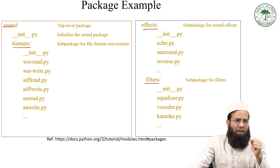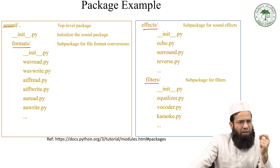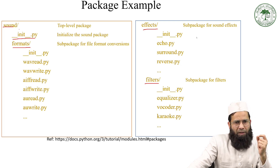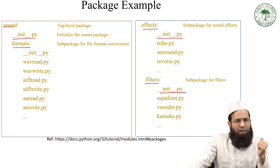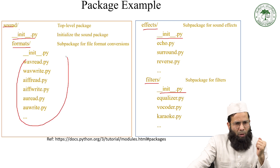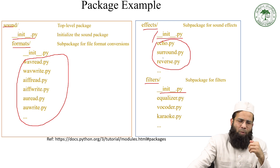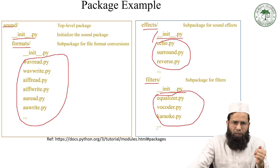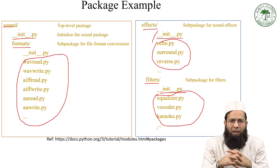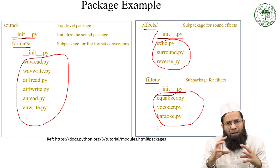In each and every package there is an __init__.py file. Inside each sub-package there are certain modules — these modules could contain classes as well as functions. In this way, we actually organize packages and modules. First, we create the top-level directory, then inside that directory we create sub-directories like formats, effects, and filters. Inside each of those directories, we create Python files that are treated as modules.